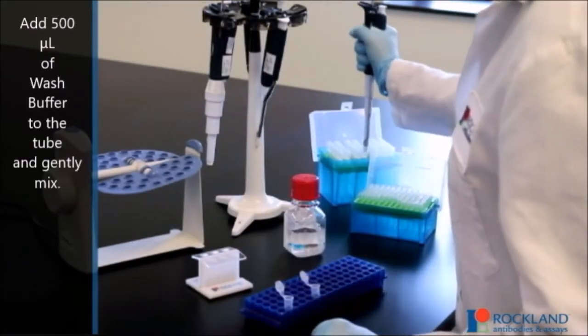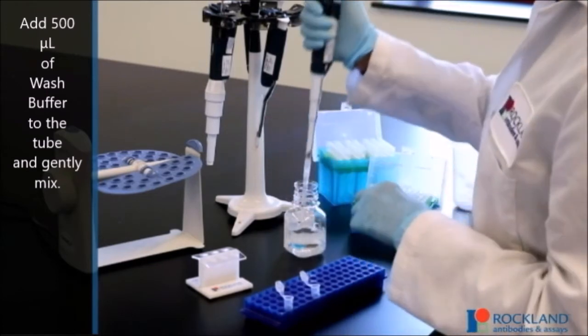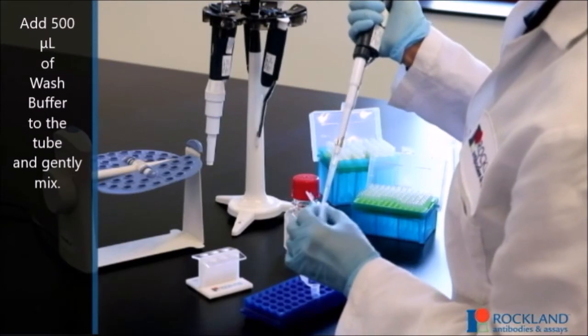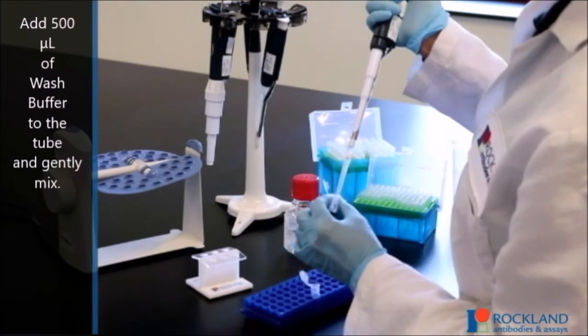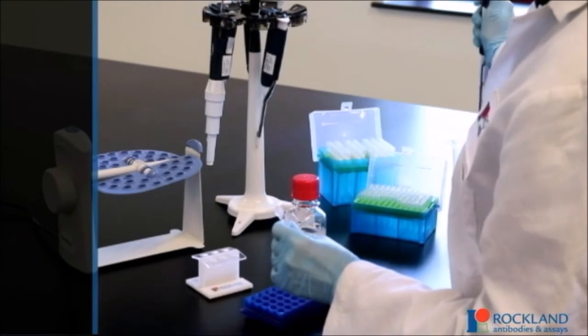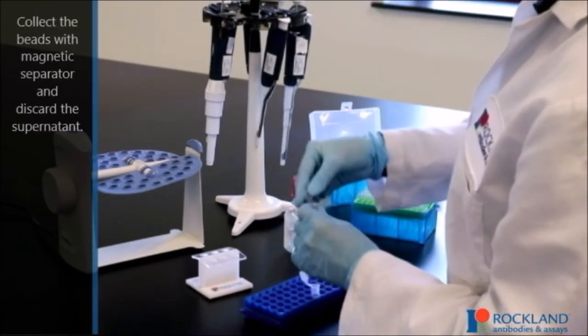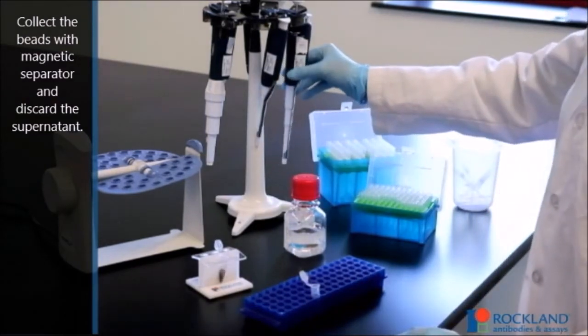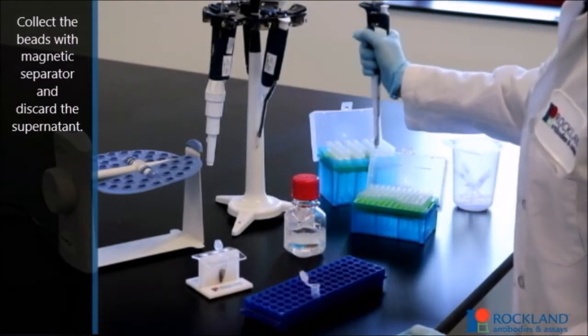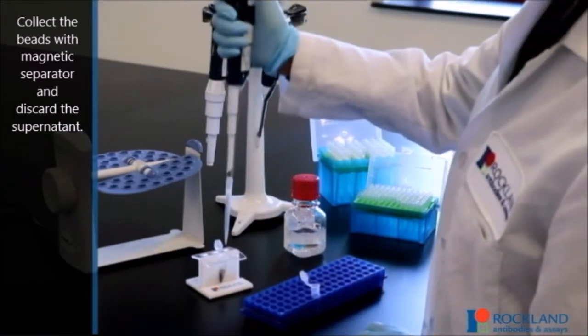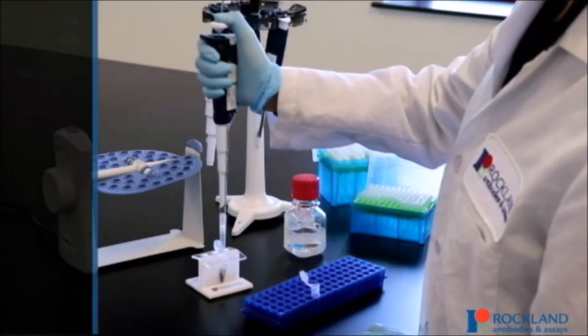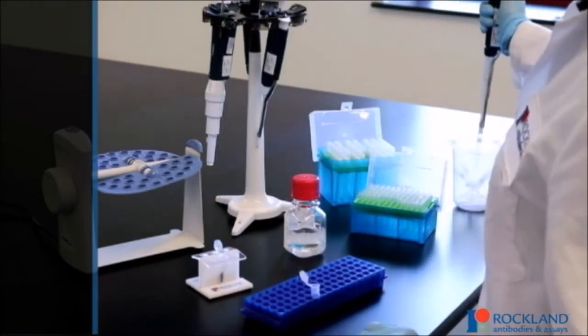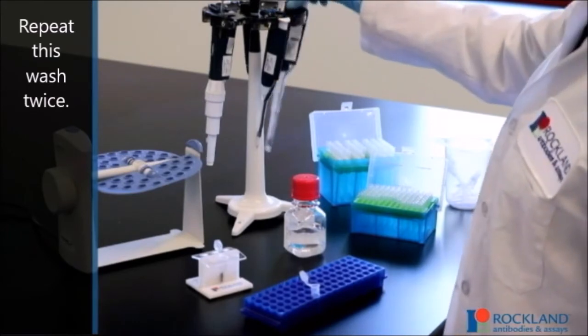Add 500 microliters of wash buffer to the tube and gently mix. Collect the beads with the magnetic separator and discard the supernatant. Repeat this wash twice.